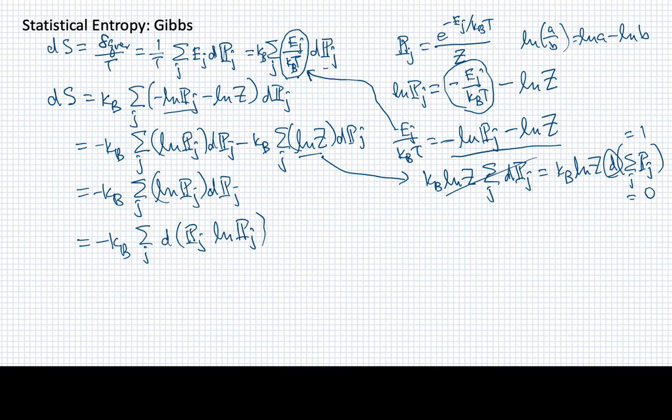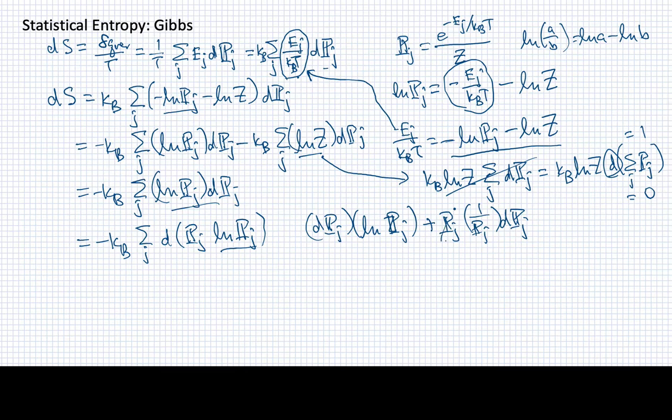So what would I get if I took this differential? Well, I'd get the differential of the first part times the second part. Well, that's just what I have here, but I also need to have the first part times the differential of the second part. Well, the differential of log of pj is going to give me 1 over pj, and then I'll have dpj. So this will cancel with that, I'll have just dpj, but I already know that the sum over dpj is equal to 0, because I got it before.